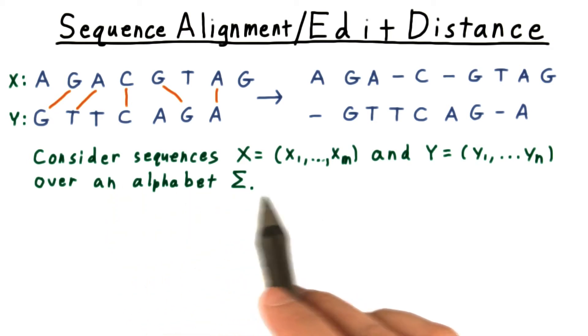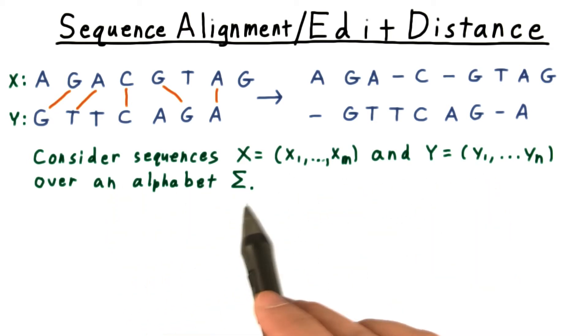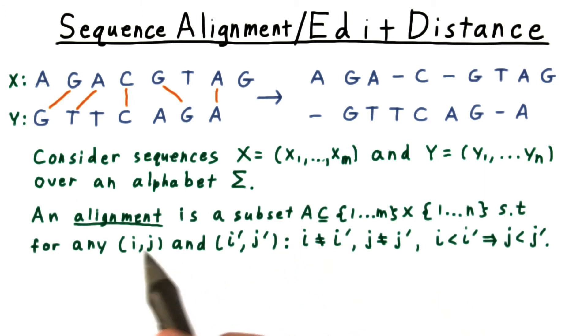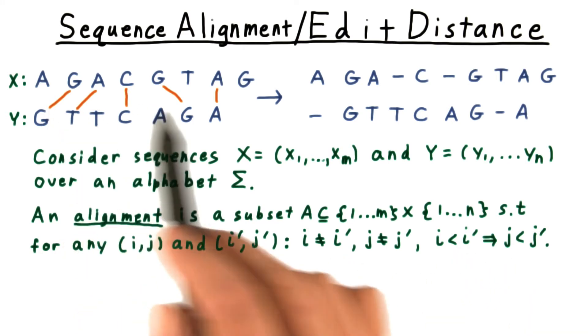In general, we say that we're given two sequences, X and Y, over some alphabet, and we want to find an alignment between them. That is, a subset of the pairs of elements of the sequence, so that each letter appears only once in this alignment, and the pairs don't cross, like in this example here.